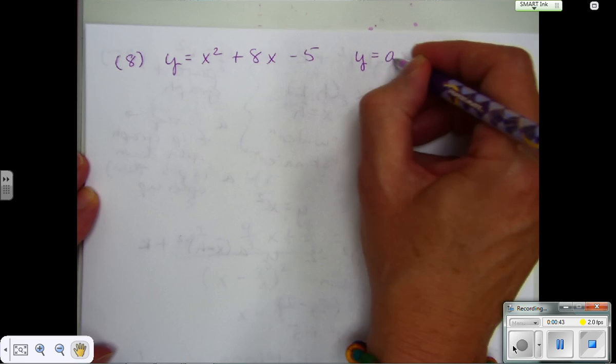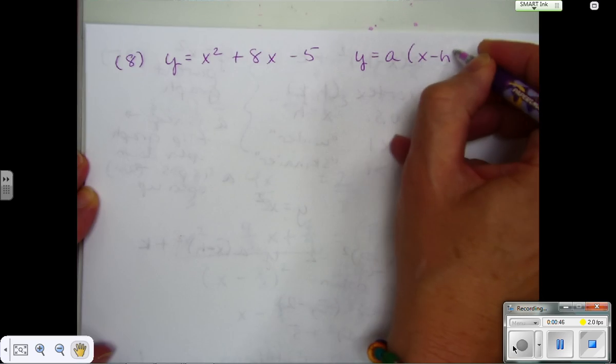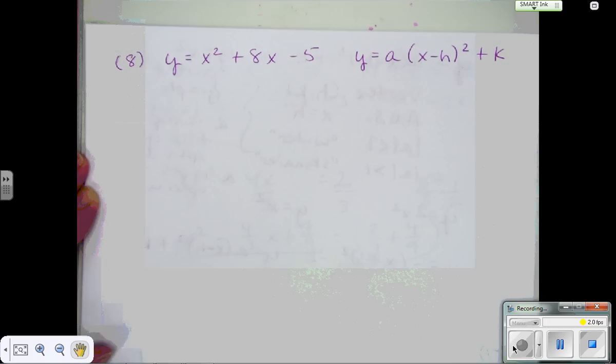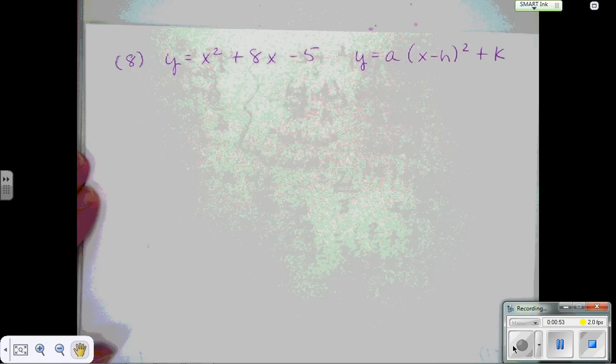I'm just going to write it here so we can compare and see what our goal is. y equals a times x minus h squared plus k.